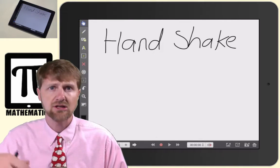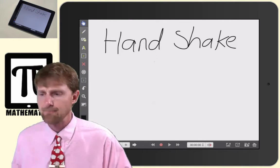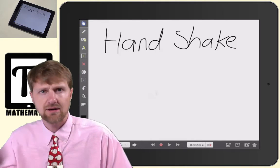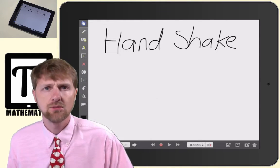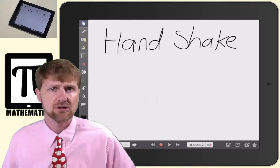A fourth person comes in, shakes hands with the previous three, and so how many handshakes would take place after 32 people come in the room and they shake hands with everybody that's currently in the room.